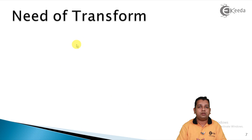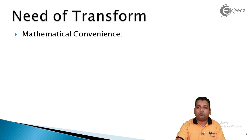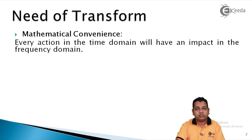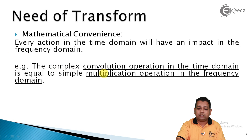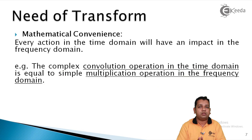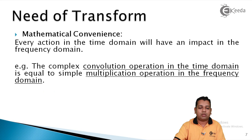Now we come to the title of this topic — what is the need of the transform? The very first need is mathematical convenience. Every action in the time domain or spatial domain will have an impact in the frequency domain. The example: the complex convolution operation in the time domain is equal to the simple multiplication operation in the frequency domain. Many other tasks may become simpler if we switch from one domain to another, and that mathematical convenience is provided by image transforms.